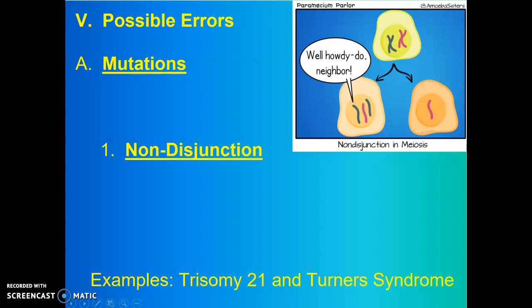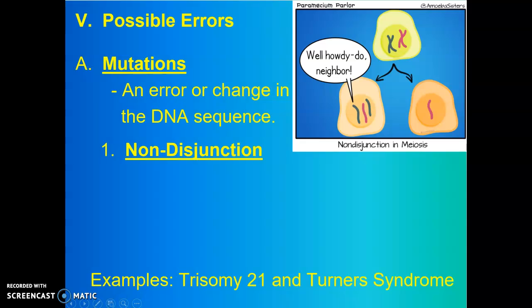A mutation is any change or error in the sequence of DNA of an individual. Our focus was really mainly on one or two letters getting changed, changing one or two codons and seeing how that could change a protein. But now we're going to be talking about tens of thousands, if not millions of bases where we change an entire chromosome, not just one gene or protein, but hundreds of genes and hundreds of proteins that could lead to significant issues.